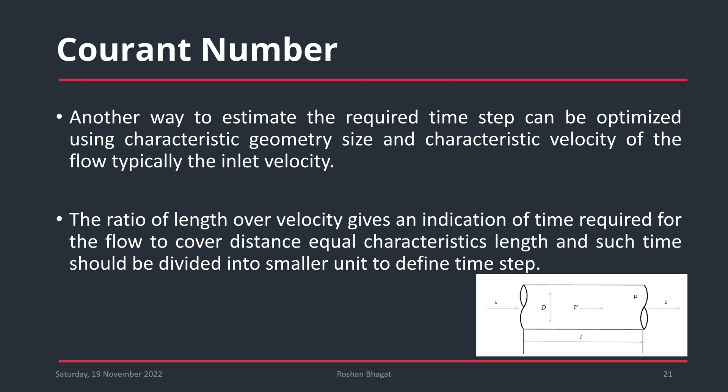Another way to estimate the required time step is to use the characteristic geometry size and the characteristic velocity — typically the inlet velocity. The ratio of length over velocity gives an indication of the time required for the flow to travel a distance equal to the characteristic length. This time can then be divided into smaller units to define the time step, helping to avoid issues where the global Courant number reaches values as high as 250, which can occur in ANSYS simulations.